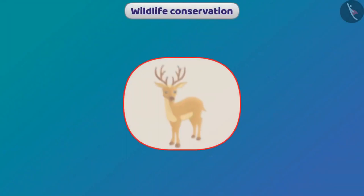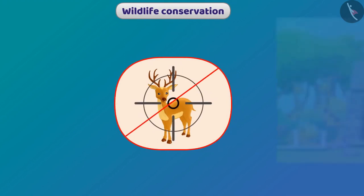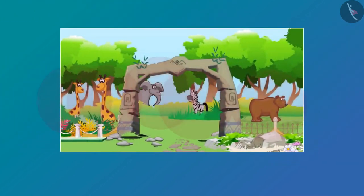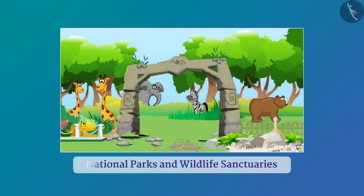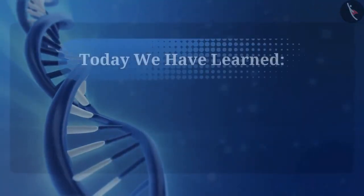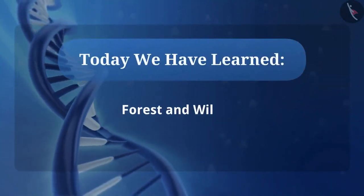We should also conserve wildlife. For this, we should strictly follow the ban on animal hunting. Animals and their habitat have been preserved with the help of national parks and wildlife sanctuaries. Discuss in your class about how you can help in the conservation of wildlife and forests. Today we have learned about forest and wildlife.